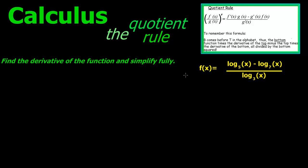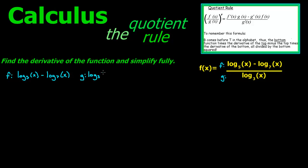The first thing we're going to do is separate this function by f and g. So we're going to have f here, and we're going to have g here. For the top part, f is going to be log base 5 of x minus log base 7 of x. And then g is going to be log base 3 of x.